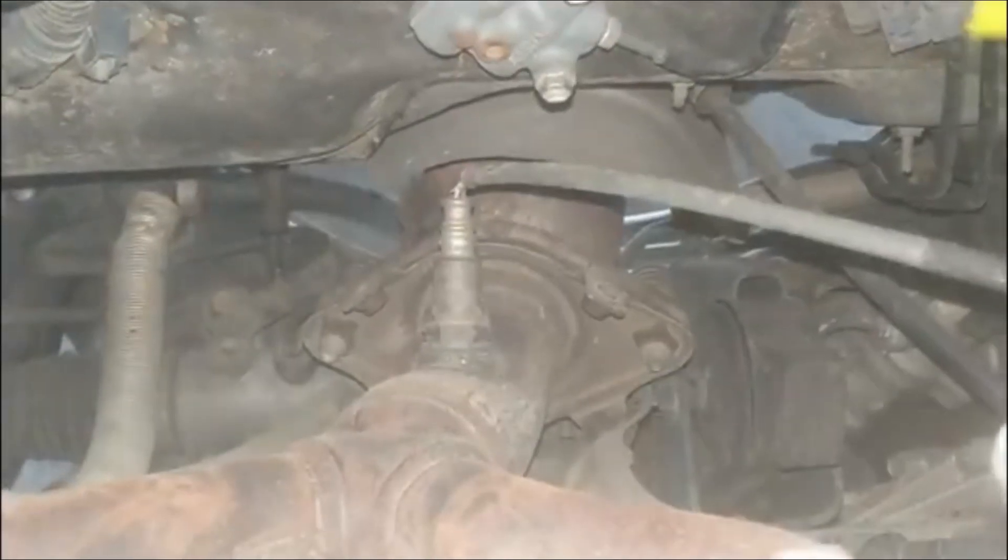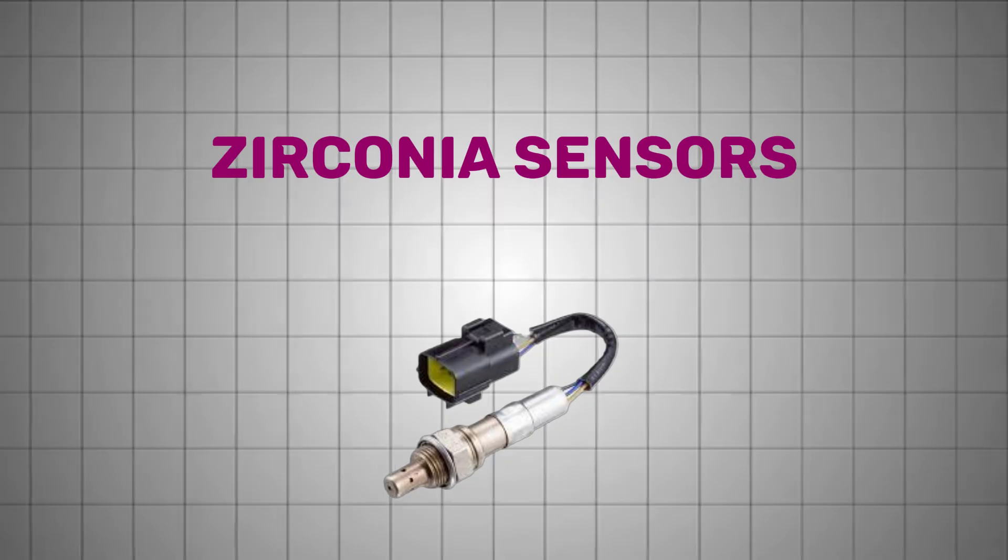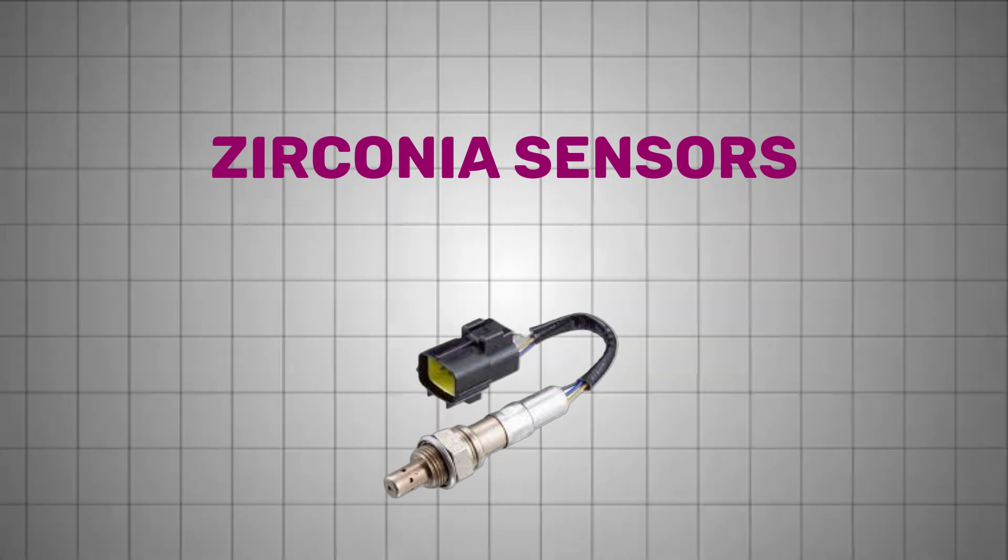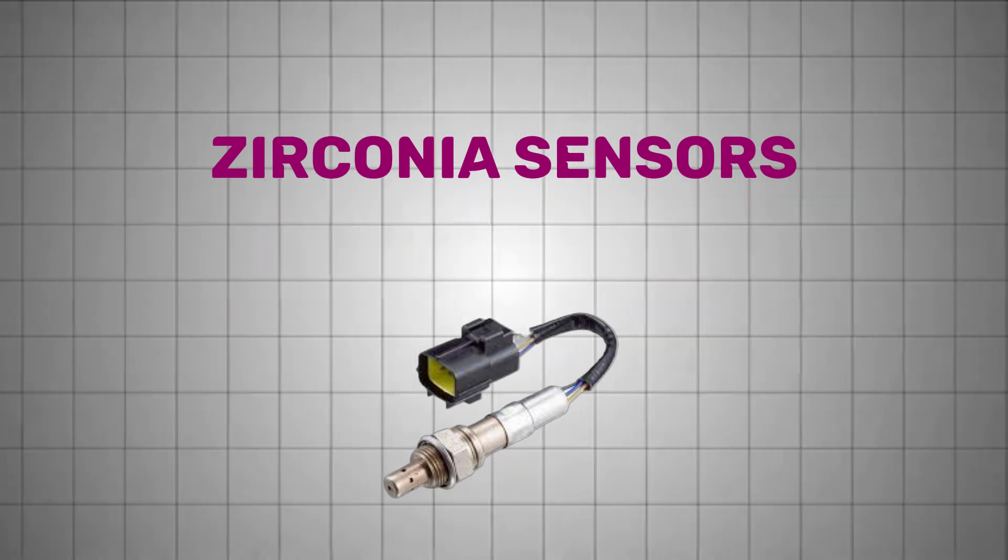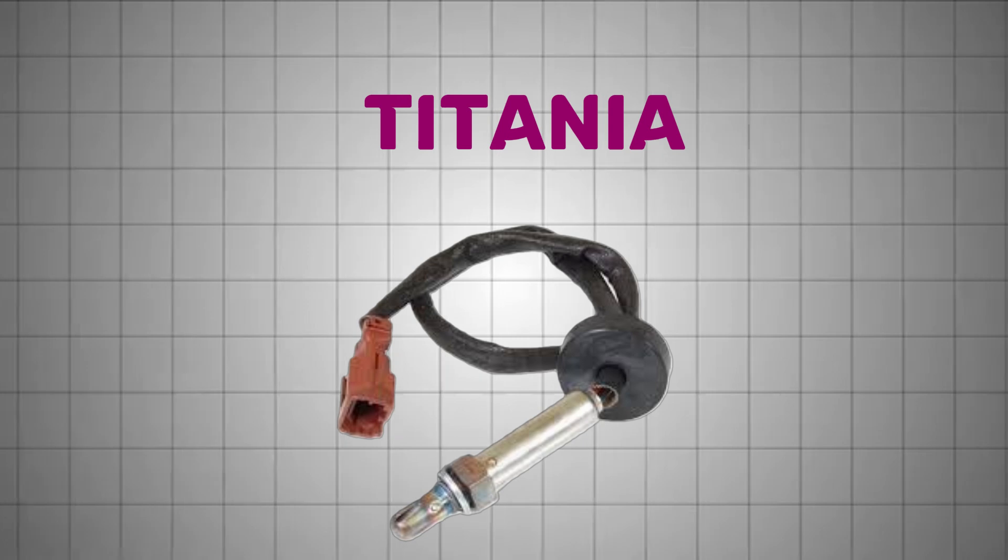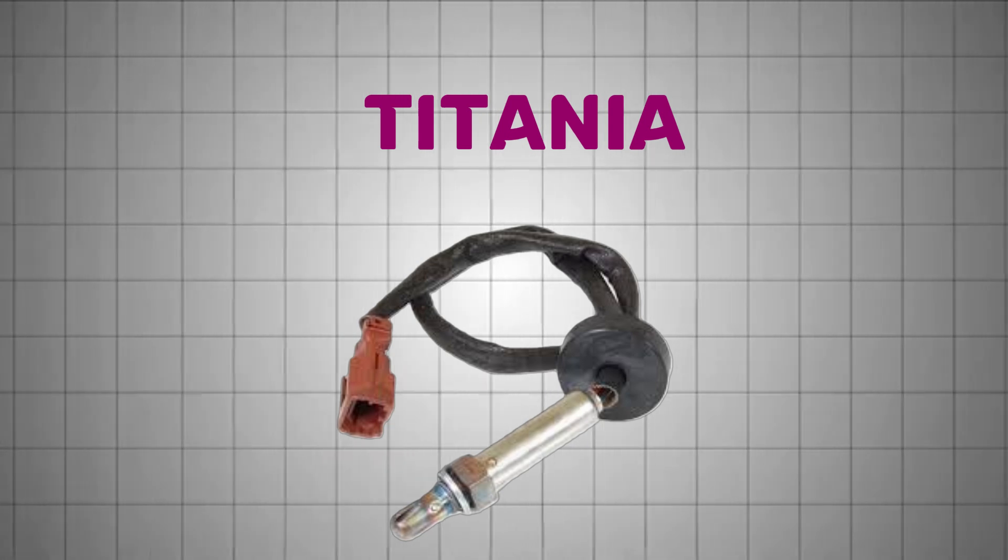These sensors are typically built using different materials. Zirconia sensors generate a voltage signal based on oxygen content, while Titania sensors change their electrical resistance with varying oxygen levels.